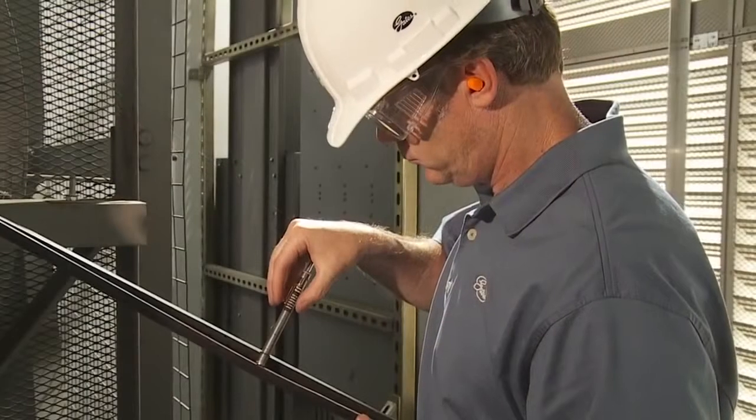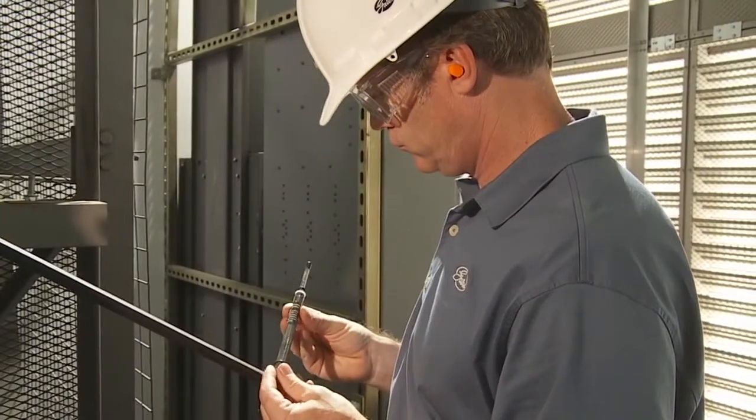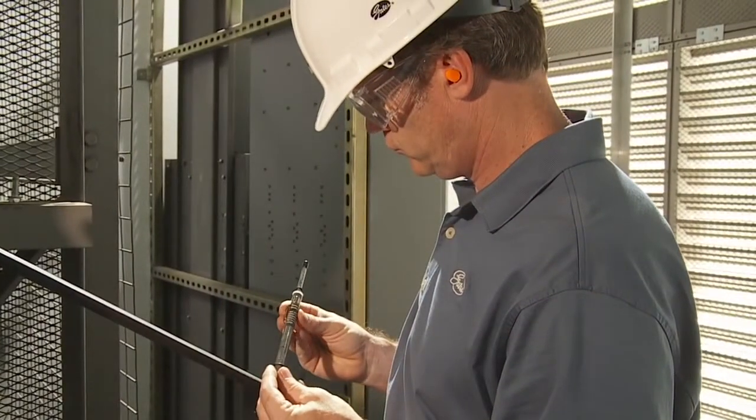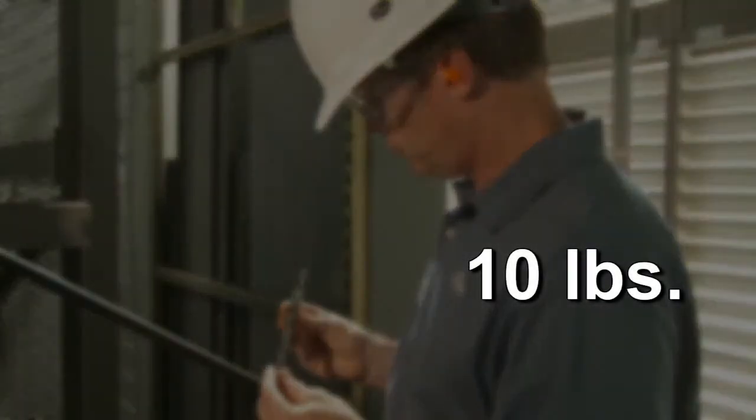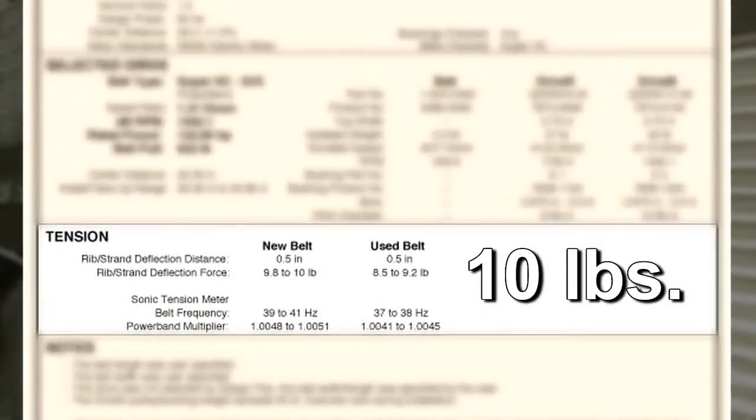Look at the force scale and verify that the reading falls between the values indicated for proper tension. If not, adjust belt tension. In our example, the reading is 10 pounds, so no adjustment is needed.